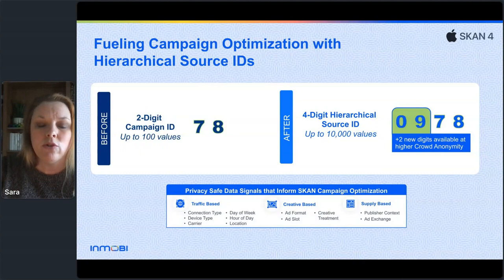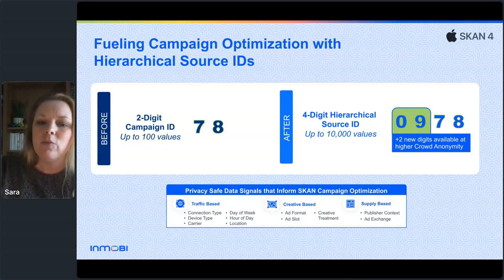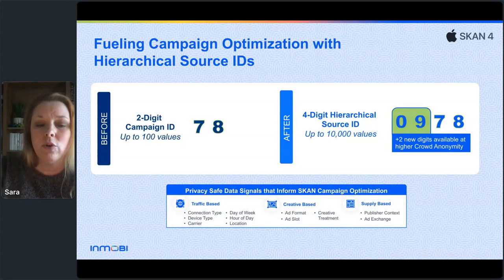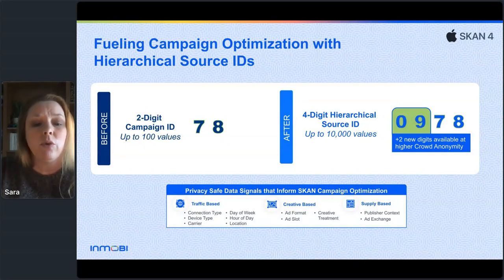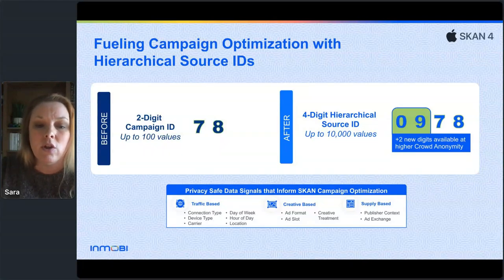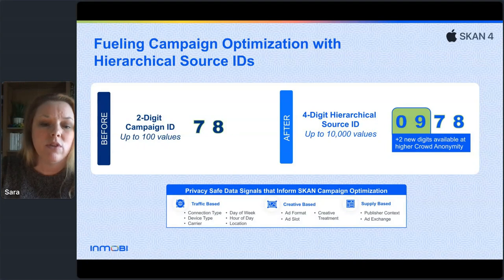Here's a look at the new hierarchical source ID. On the left is the two-digit value from earlier SKAN versions; on the right, you now get up to four digits, earning the extra two digits depending on the level of crowd anonymity achieved. From a media partner perspective this is really useful from an optimization and testing standpoint — many more flavors to test and optimize against. Sample privacy-safe signals include traffic type like device or connection type, temporal info like time of day or day of week, location, creative theme, ad slot, ad format, and supply — whether ad network, exchange, or specific app or category.